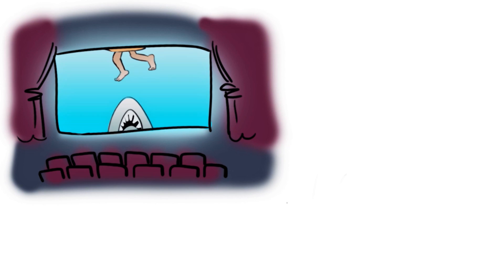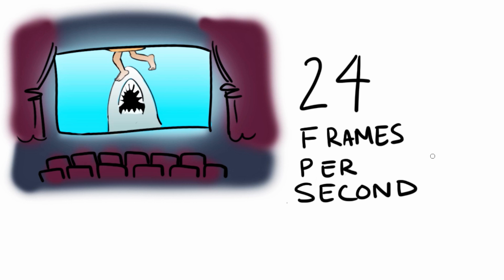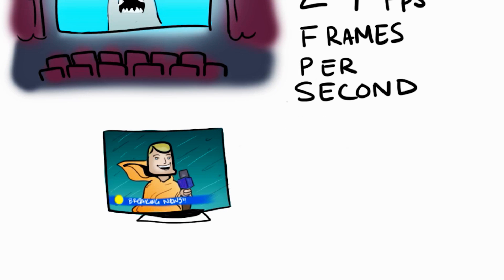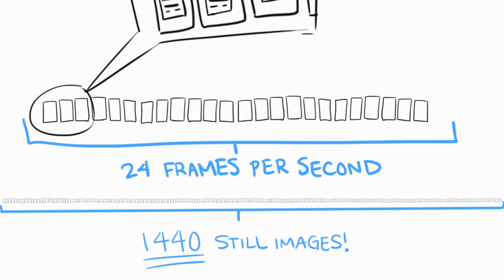To better understand how many photos you will need for your time-lapse, it helps to understand how frame rates work. When you watch a film in your local cineplex, you're actually seeing 24 still images being projected on the screen per second. This frame rate is referred to as frames per second, or FPS. For broadcast video, the frame rate is 30 FPS. If you watch one minute of video at 24 FPS, you are actually seeing 1,440 still images.